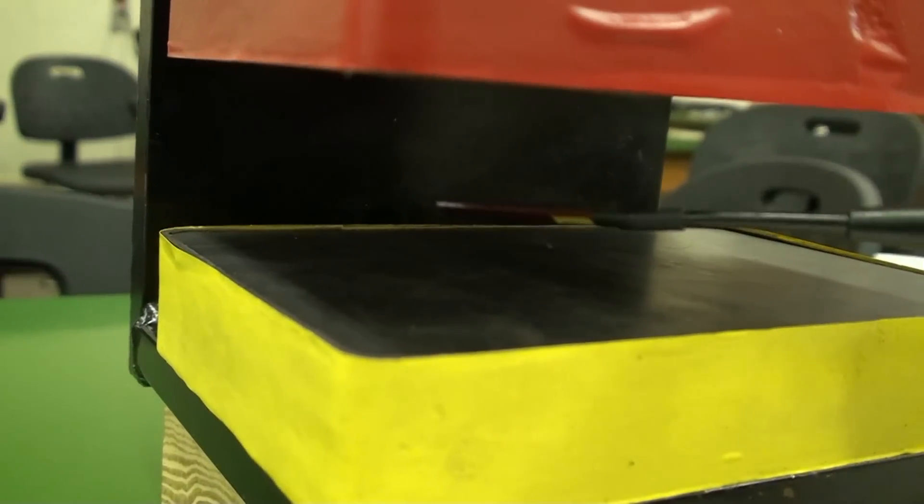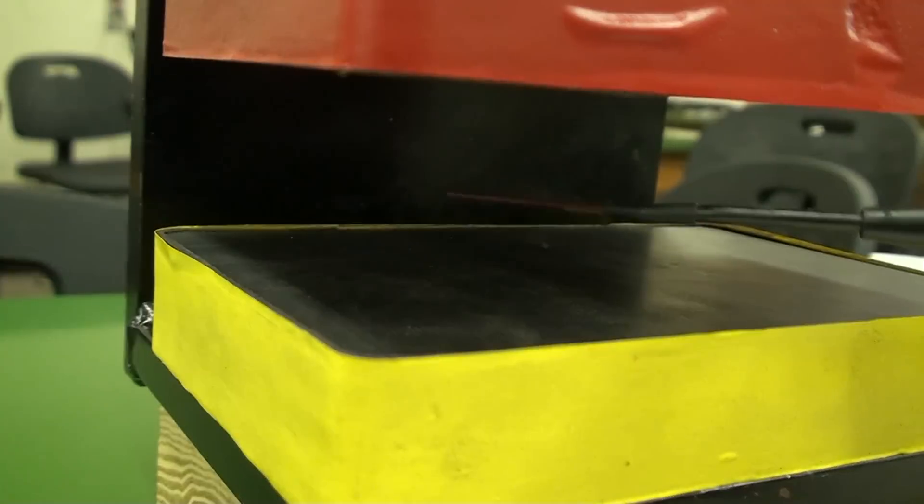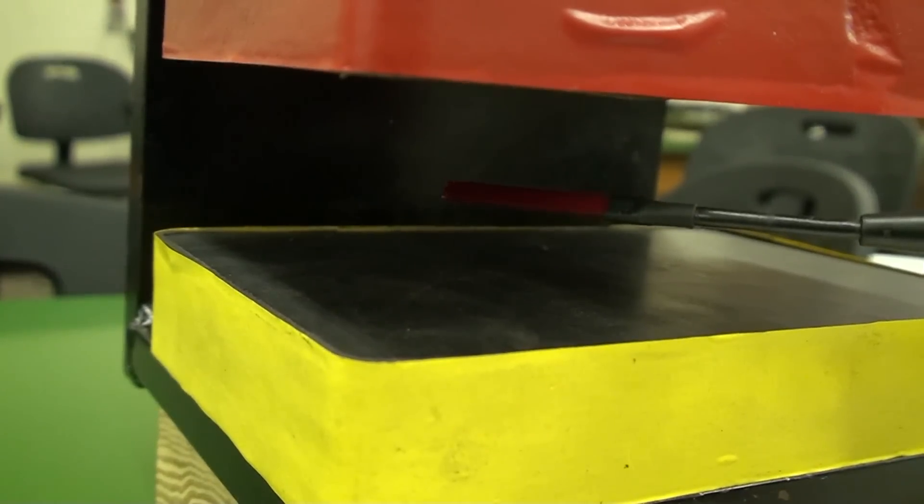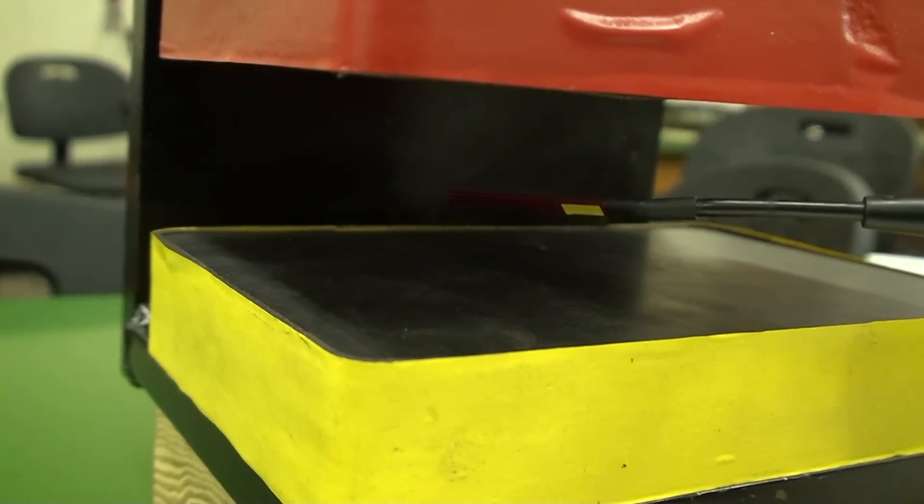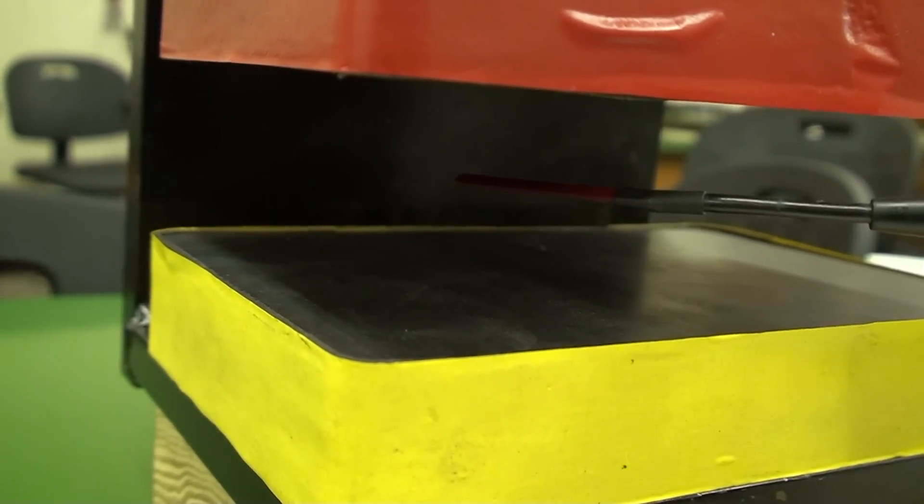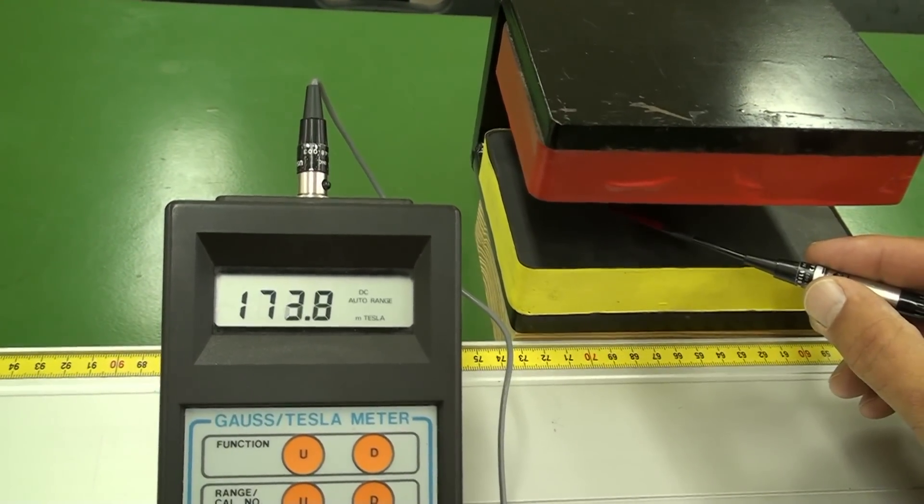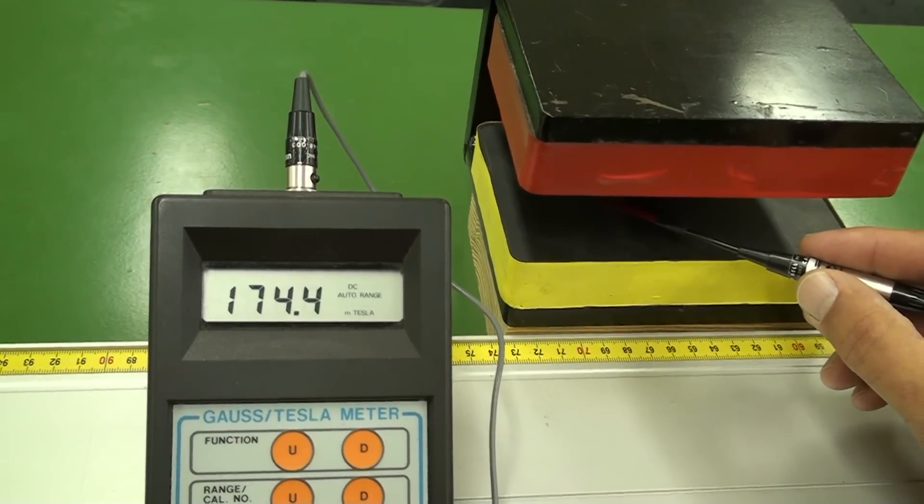Measure B by inserting the Gauss meter probe with the vertical B field perpendicular to the flat surface of the probe. Rock the probe slightly to find the maximum reading. Here you see the displayed reading change until we...